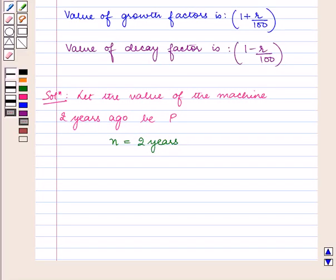So, we shall use the compound interest formula using the decay factor where the decrease rate r is equal to 8% per annum.